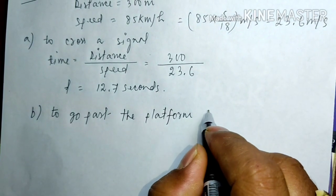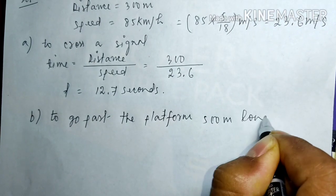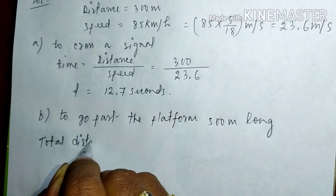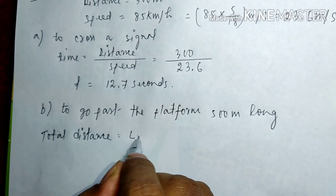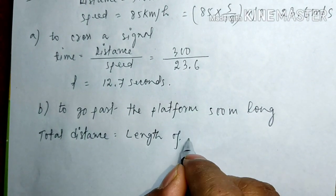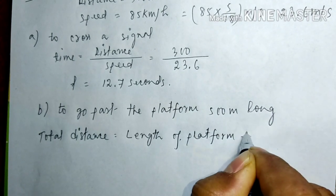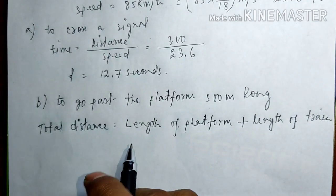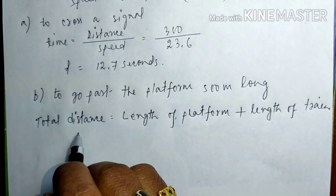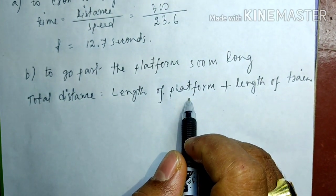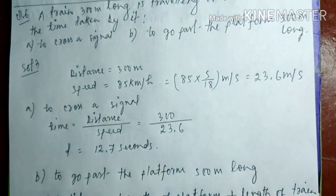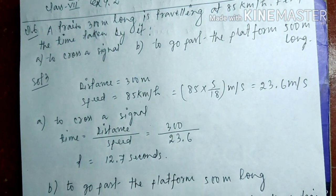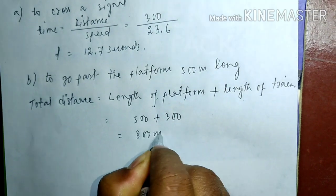Part b is to go past the platform 500 meters long. The total distance will be the length of the platform plus the length of the train. The length of the platform is 500 meters and the length of the train is 300 meters, so the total distance is 800 meters.